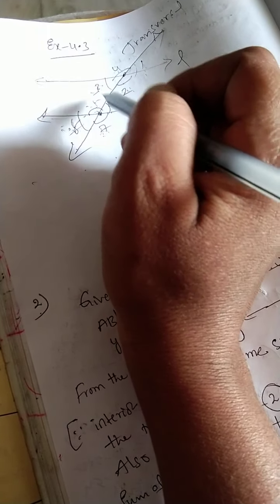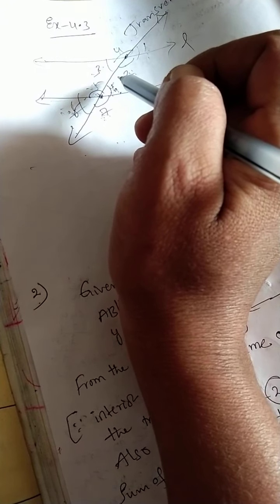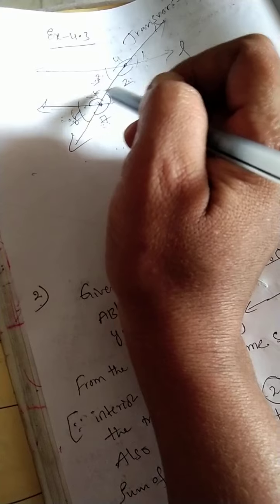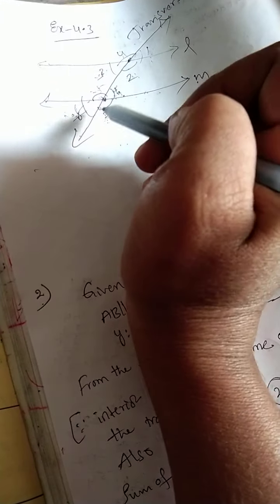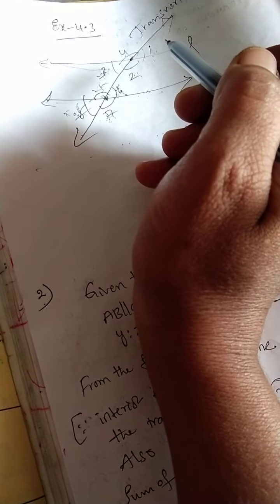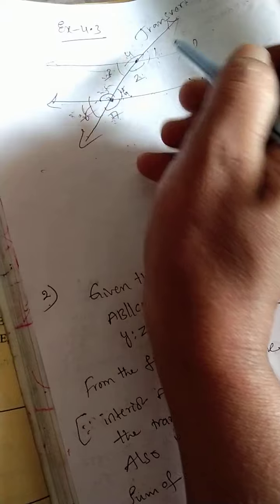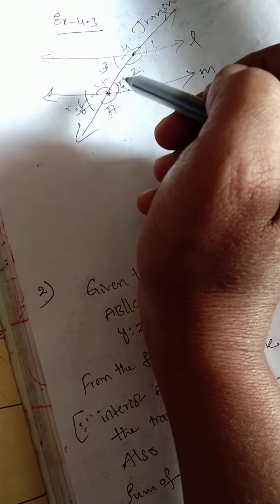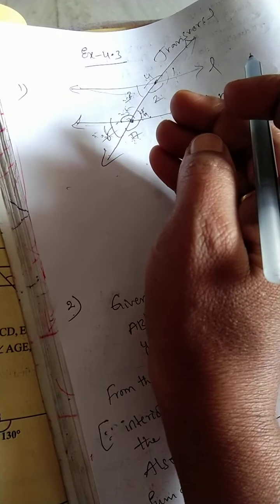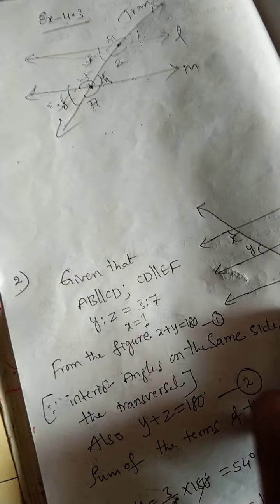Alternate interior angles lie on either side of the transversal in the interior region. Alternate exterior angles are angles 4, 7 and angles 1, 8 — they are on either side of the transversal and outside the parallel lines, so we call them alternate exterior angles. This completes the explanation of all eight angles and their types.